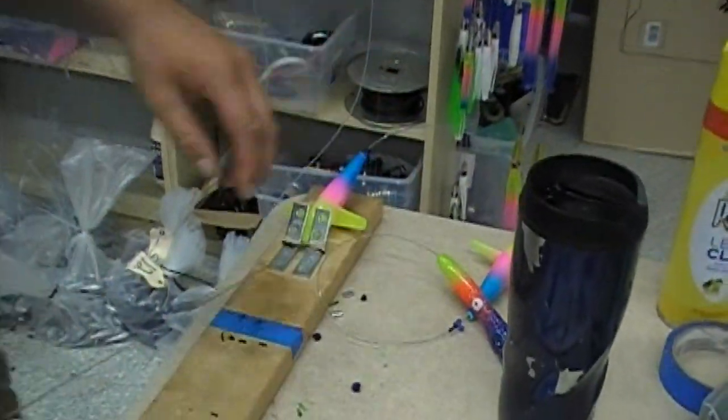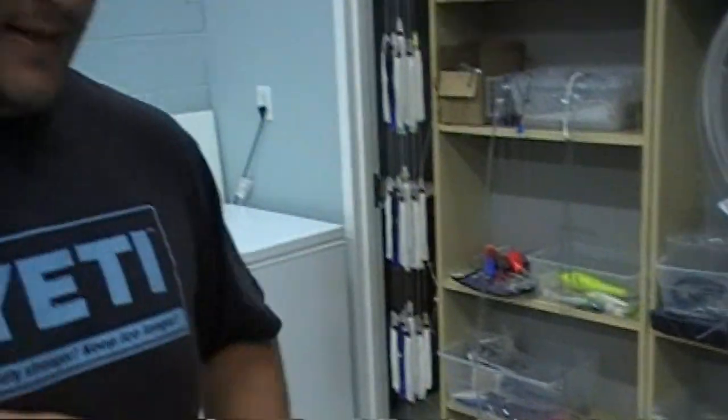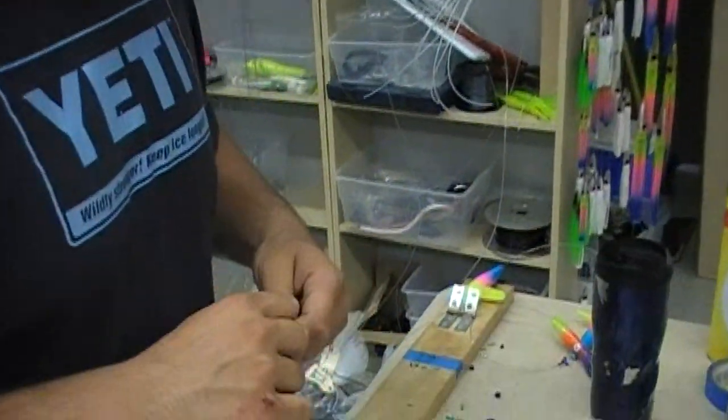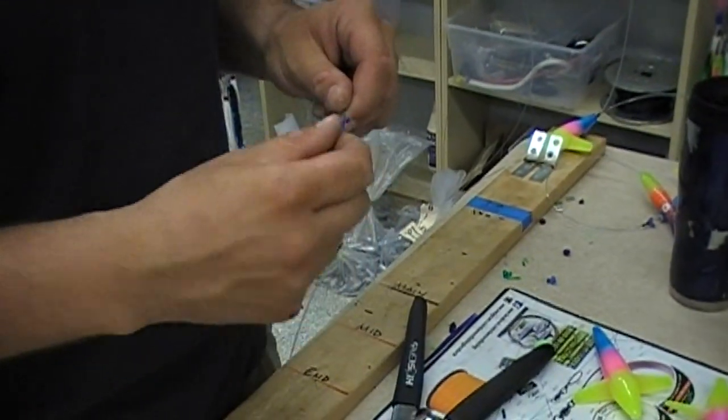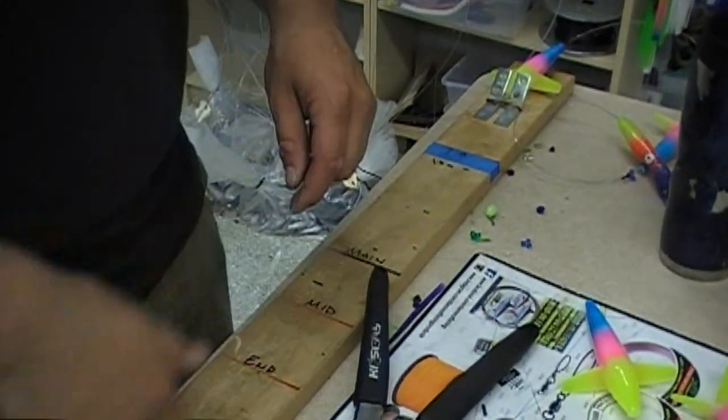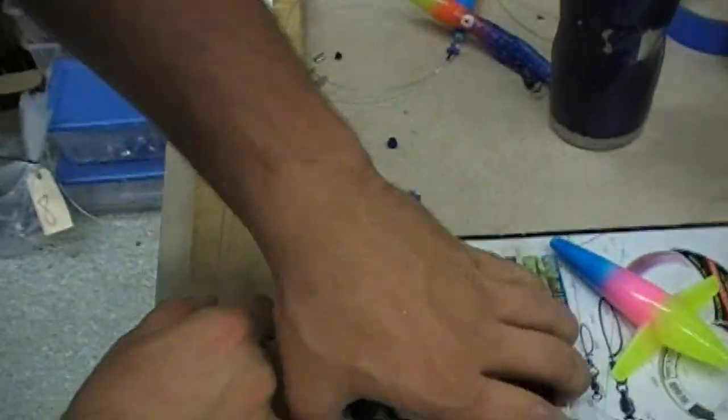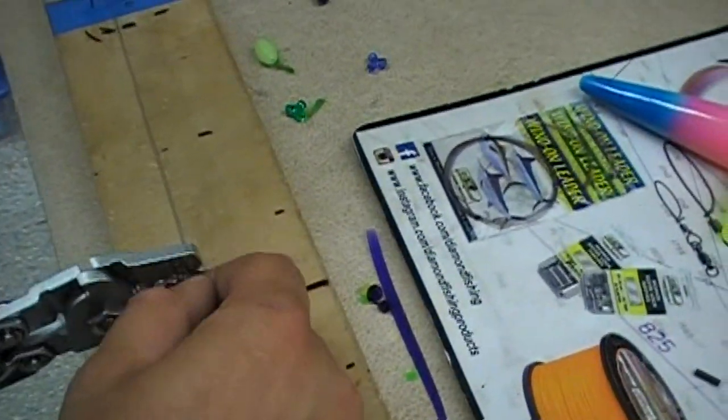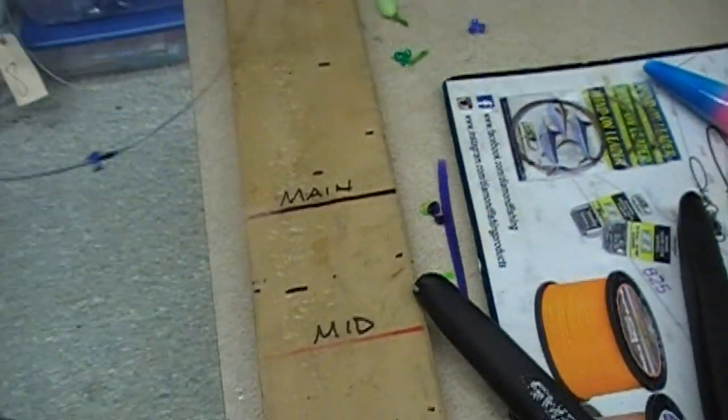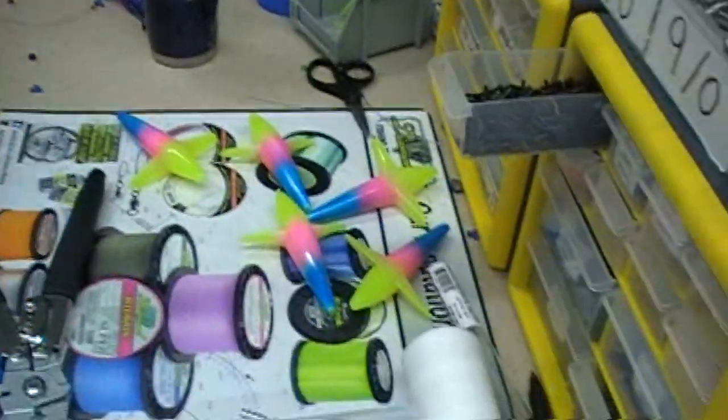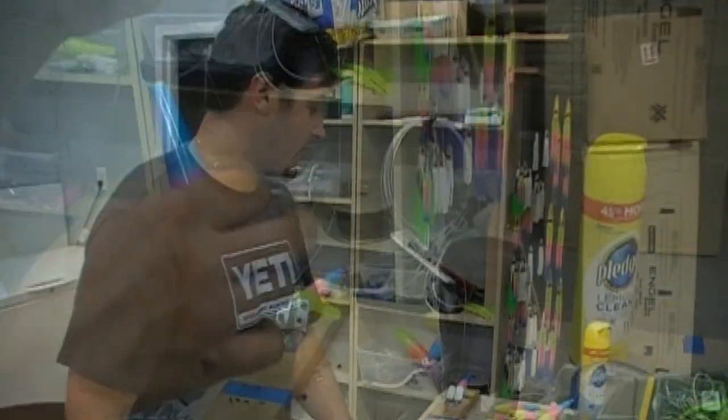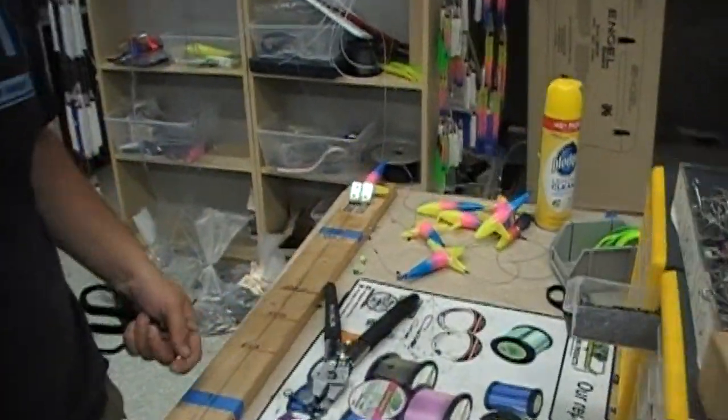Here we go. Third bird. Same thing. Different bird. Here we go. Quick squeeze. So now we have all seven birds on our chain ready to go.